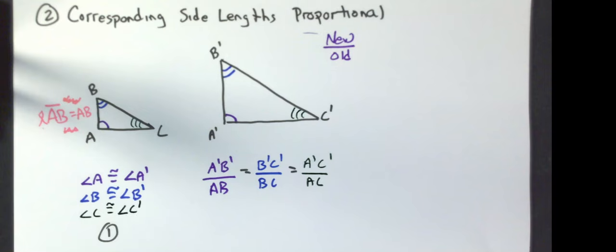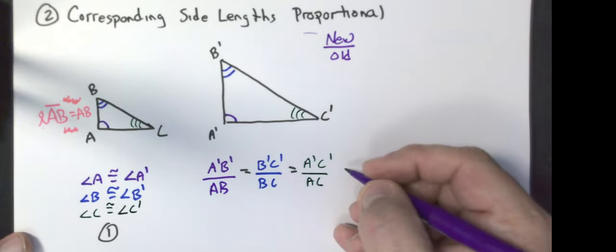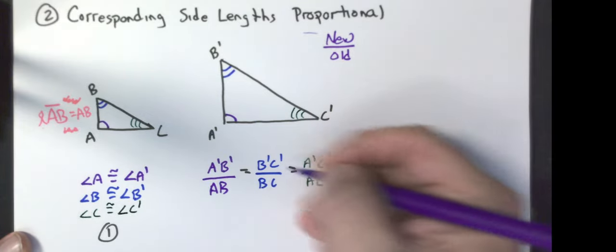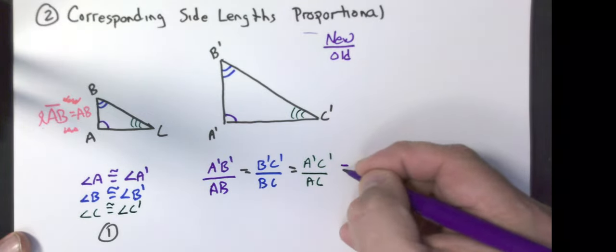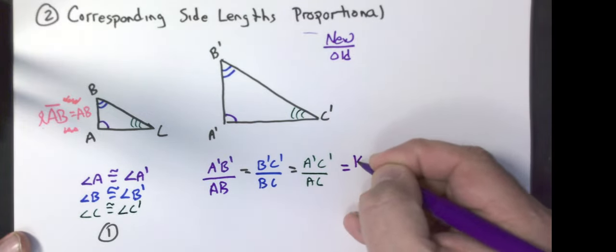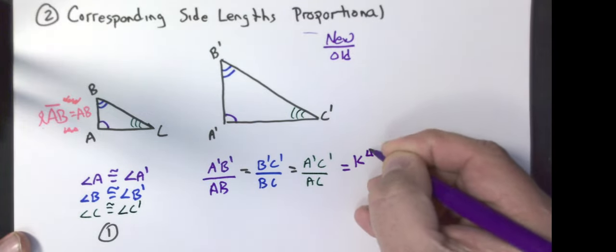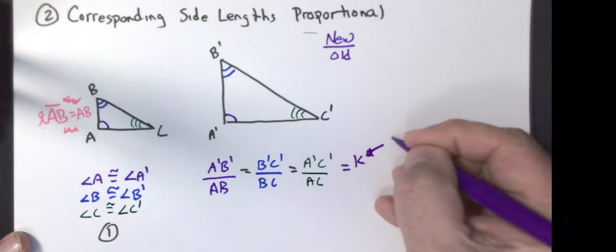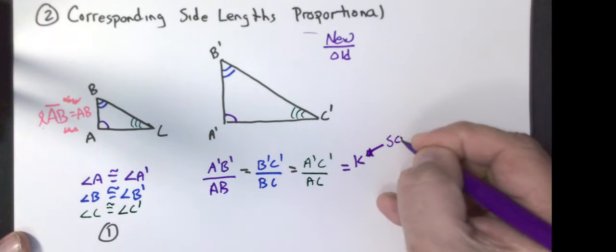We always put new over old, because if we do that and get the same number, that ratio is actually going to give us our scale factor from the last lesson.